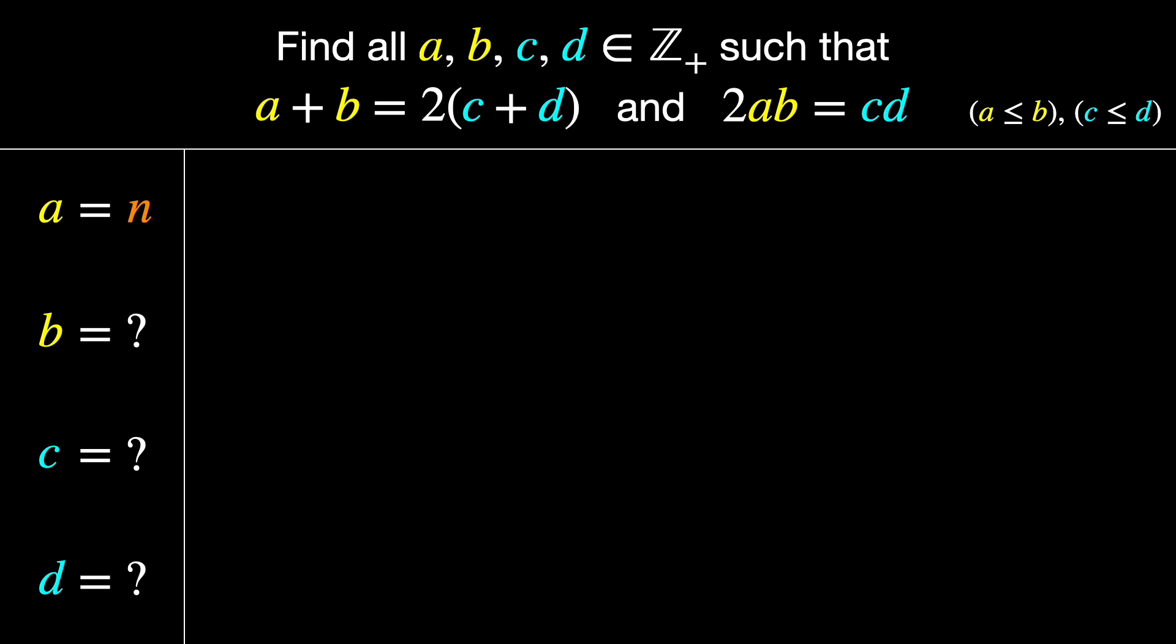Great, so we only have three unknowns. Now let's work with the equations and see what happens. We could do this a few different ways, but let's start with the perimeter equation.